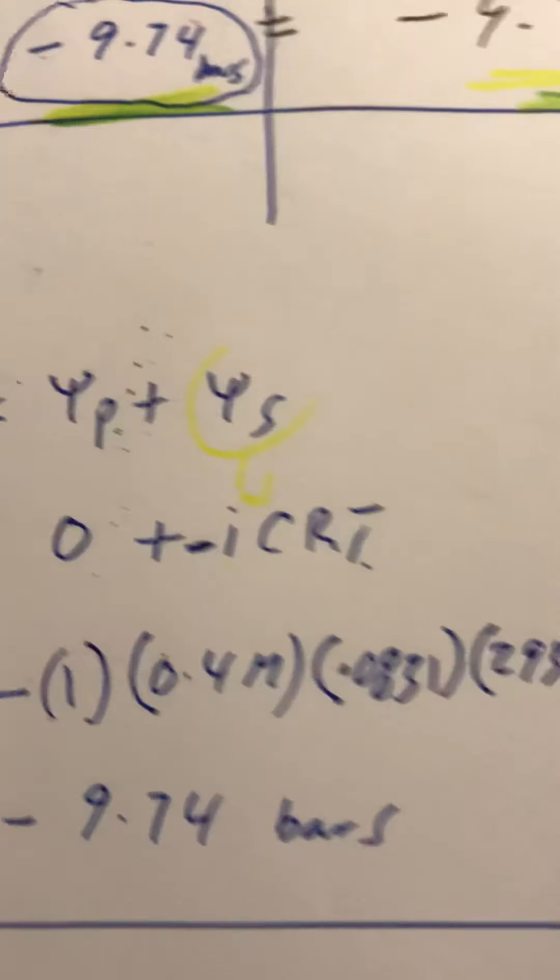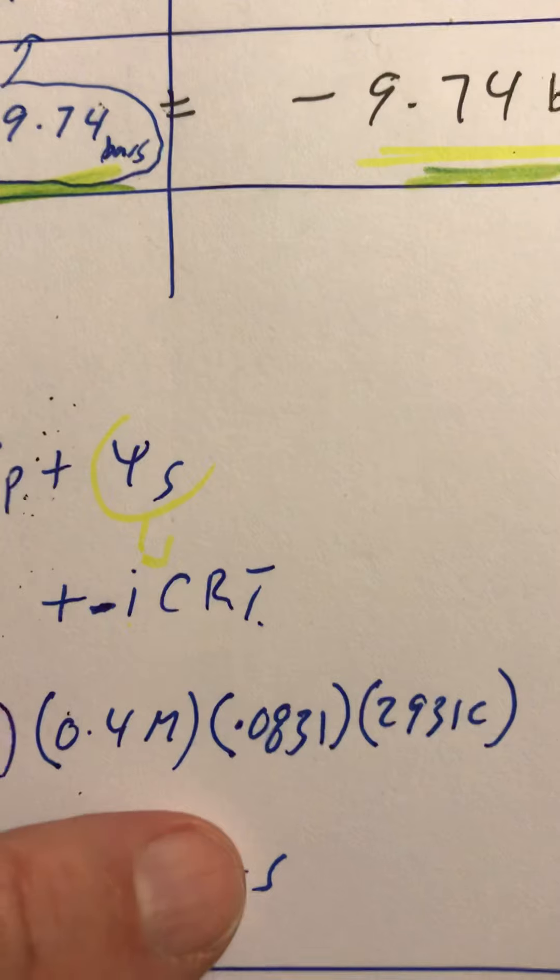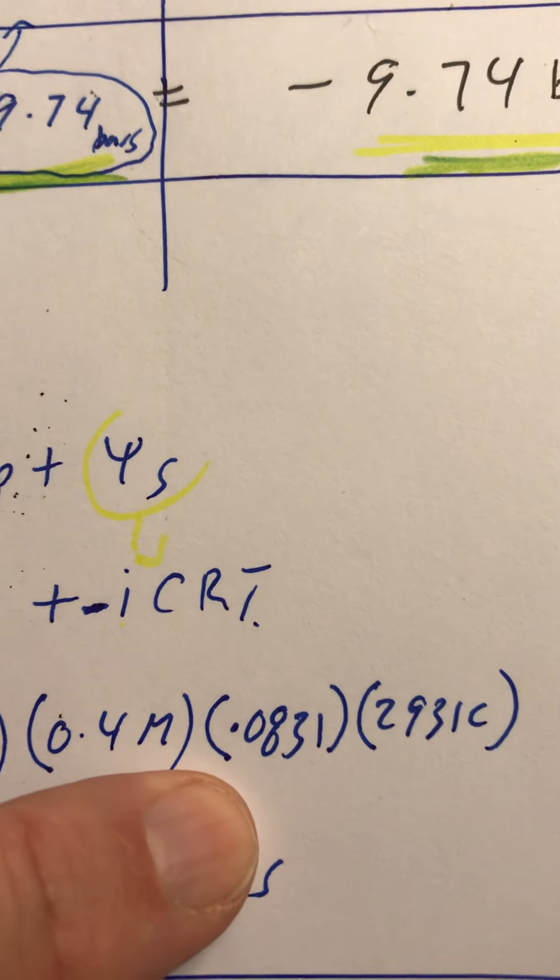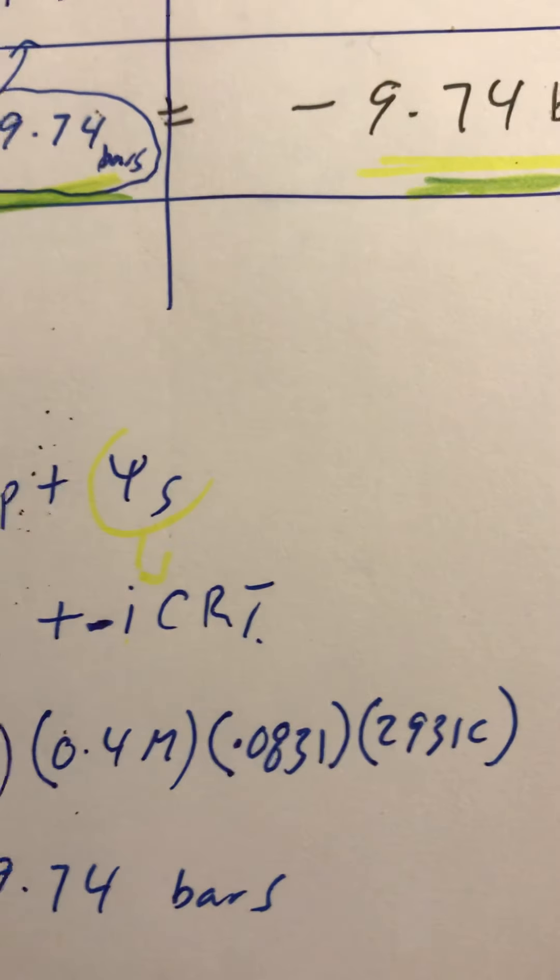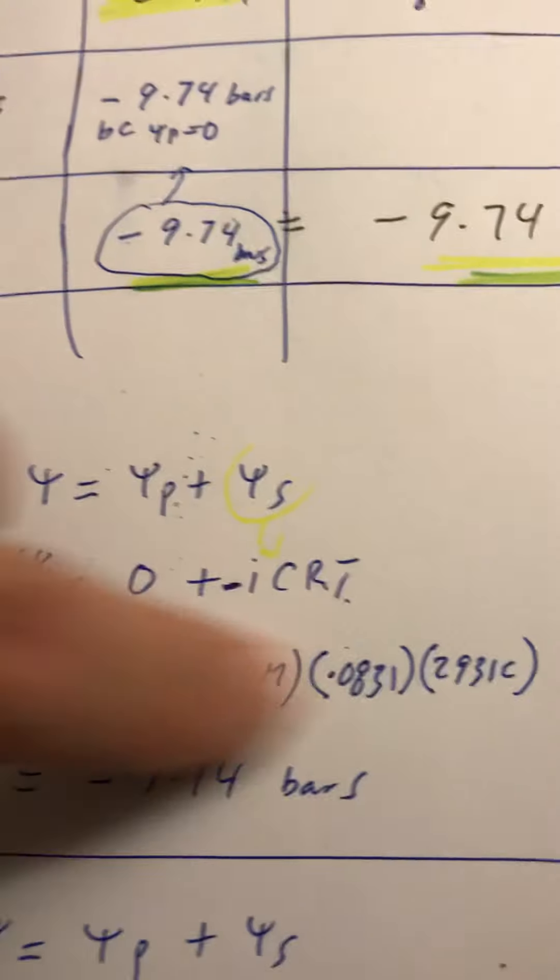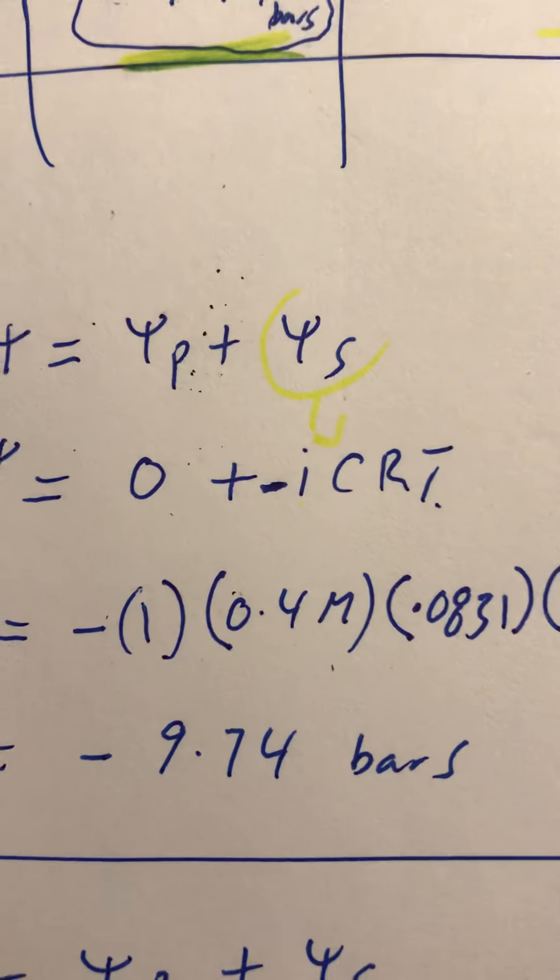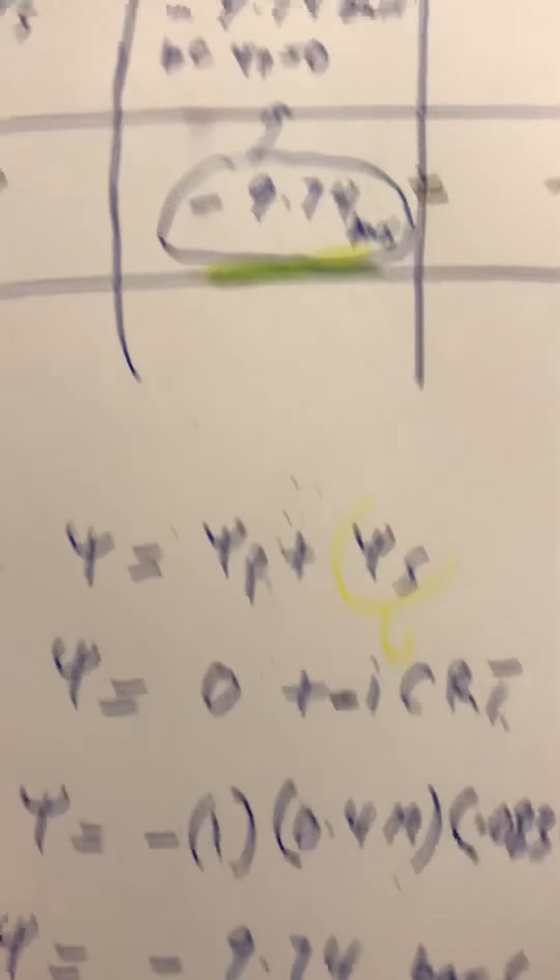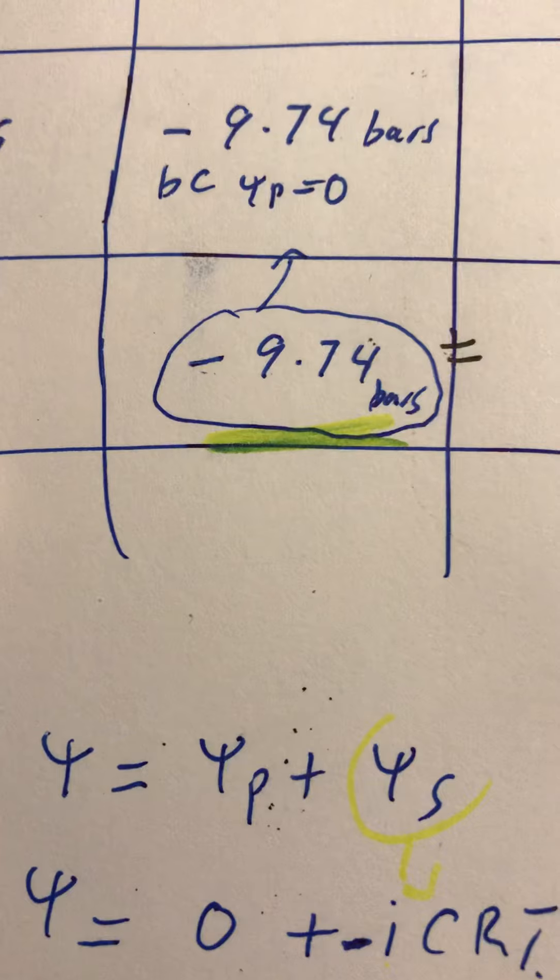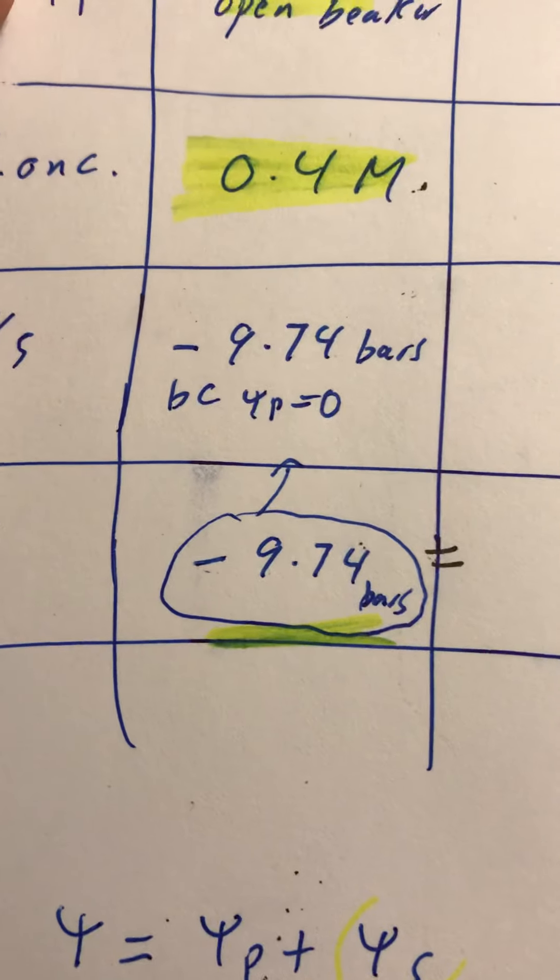My concentration is given as 0.4 molar. My constant R is always 0.0831, it's a constant, and then my temperature in Kelvin. I do my multiplication and I come up with psi equals negative 9.74 bars.